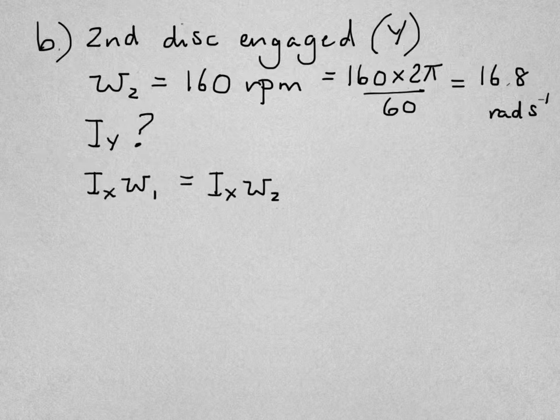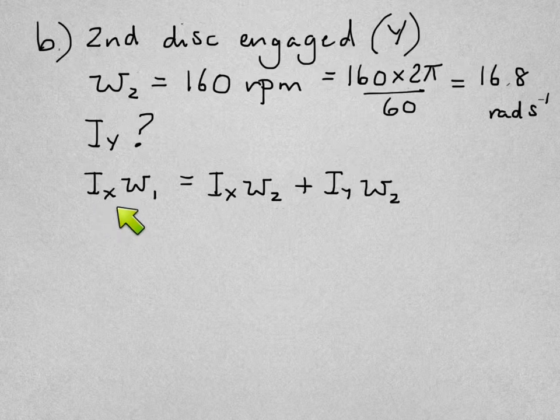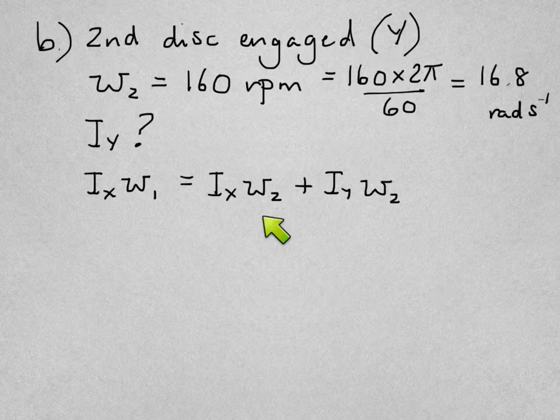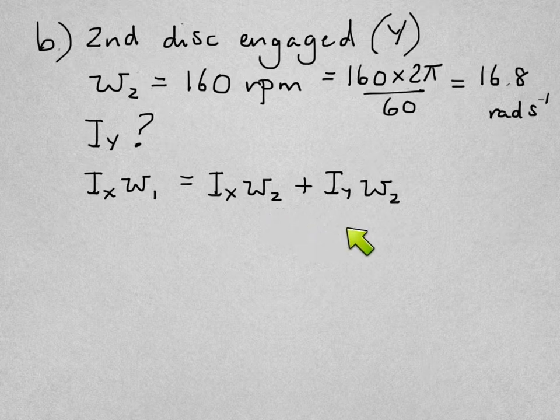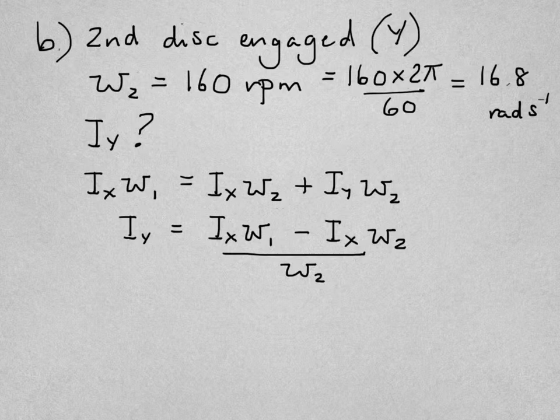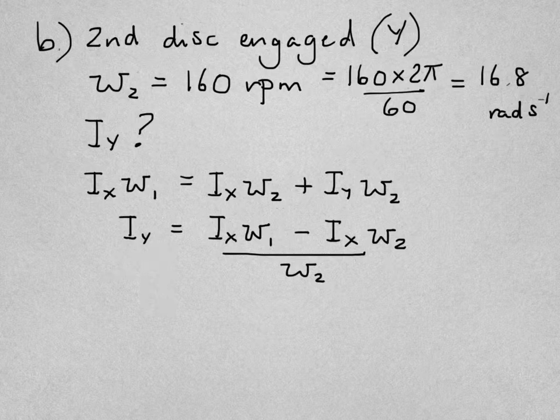Using conservation of angular momentum, the moment of inertia of the same disc X times its angular speed must equal the moment of inertia of the same disc times its final speed plus the moment of inertia of the second disc times its final speed. Since they're locked together the two final speeds are the same, ω₂. If we rearrange that we get I_Y equals I_X × ω₁ minus I_X × ω₂, all divided by ω₂, leaving I_Y on its own as the subject of the equation.